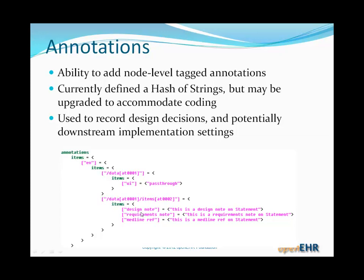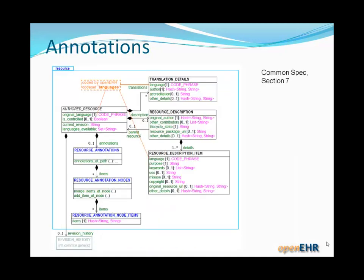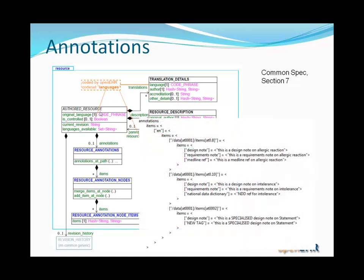You can see an example of the annotation section: at a certain path, we've got the language English, and then a tag 'UI' and something called 'pass-through'. At another path there are three tags: Design note, Requirements note, and MedlineRef. The UML model for annotations comes from the common specification section 7 and is part of the authored resource class, which is inherited into the archetype class. You can also see translations and descriptive parts coming in from this authored resource class. The data structures defined here are essentially simple hash table structures.